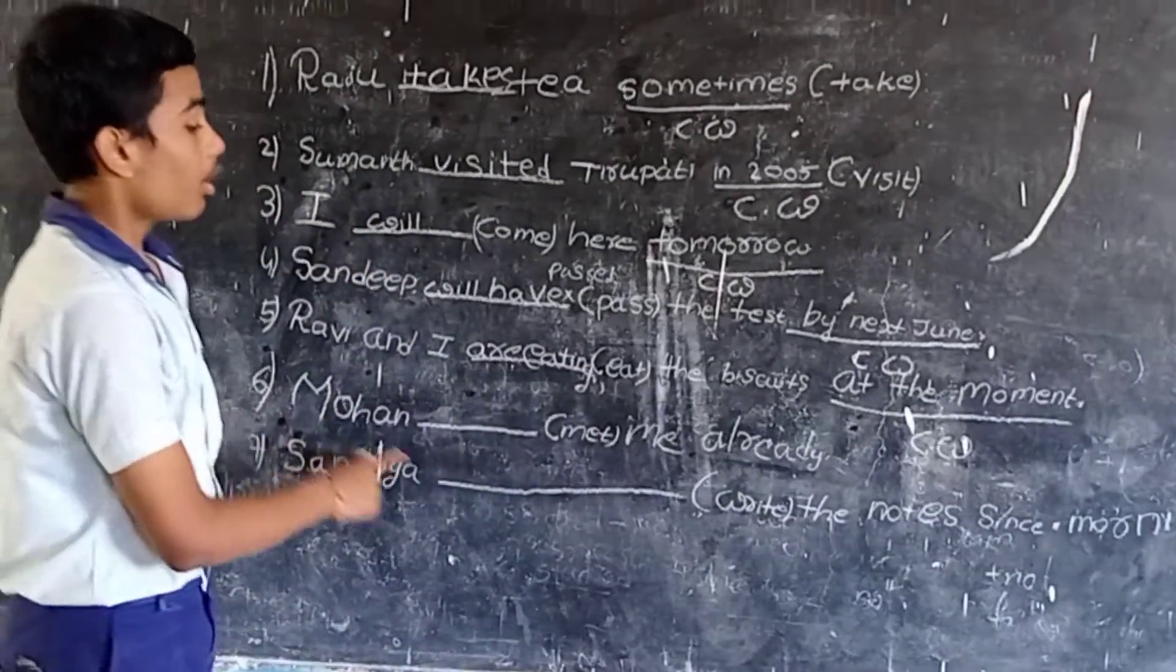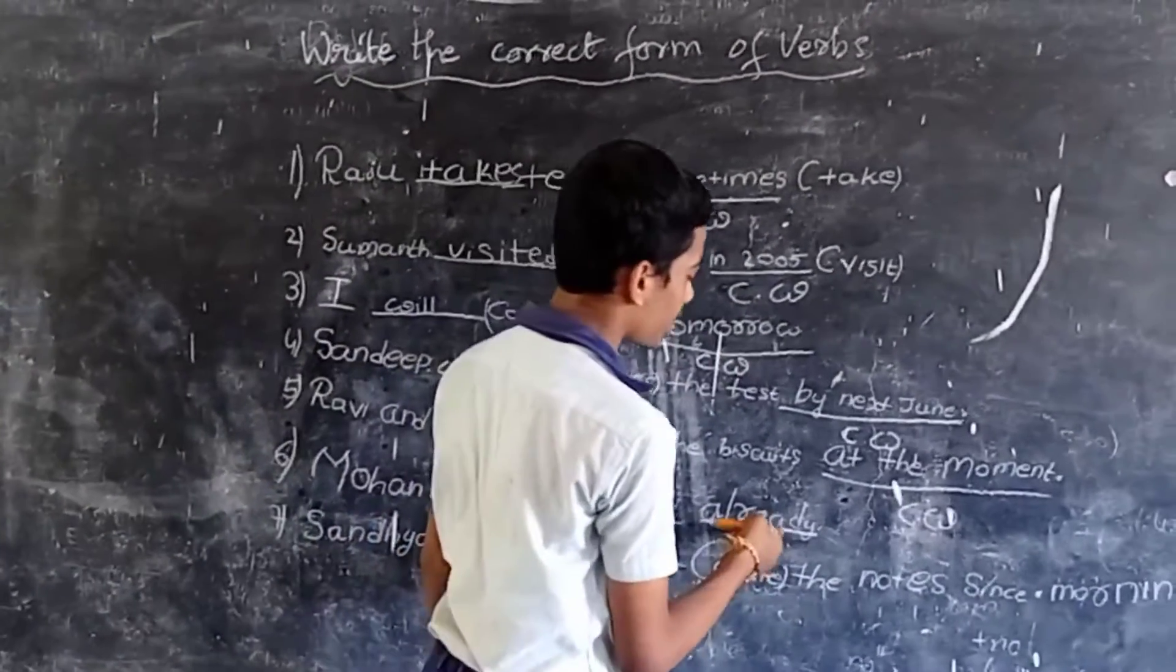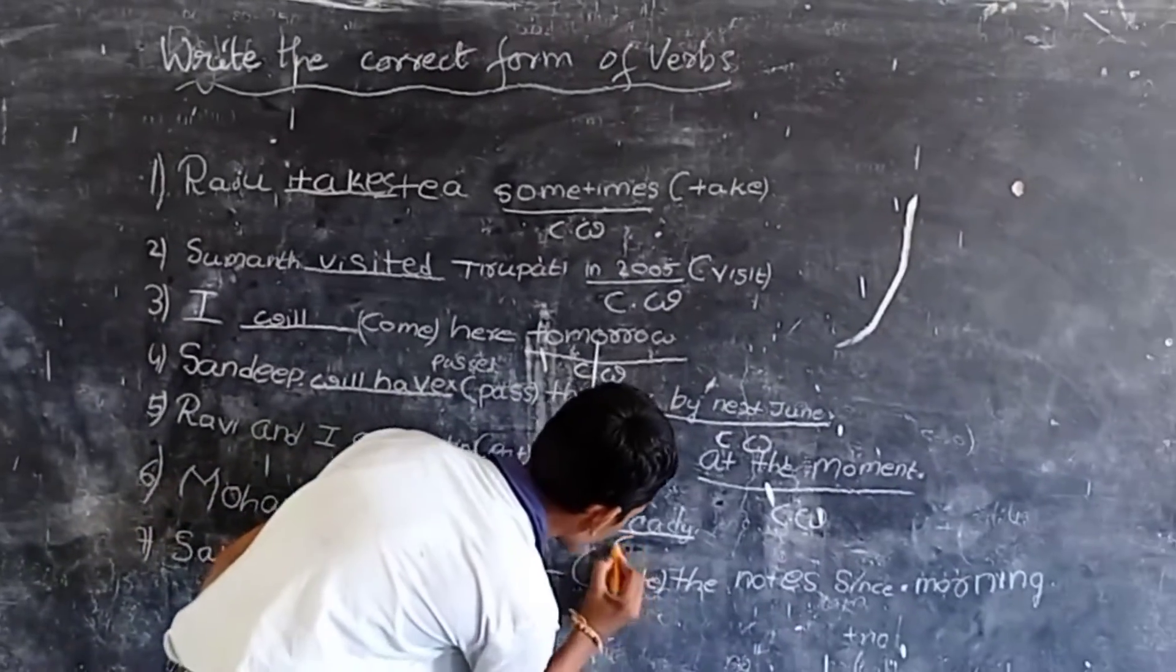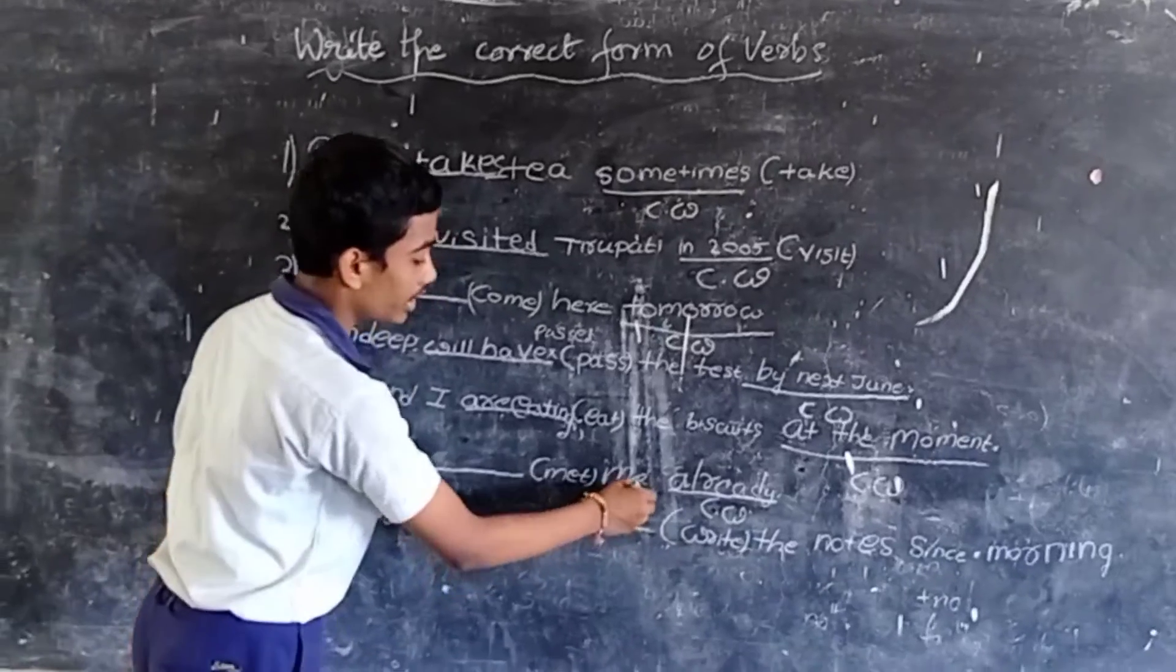Next example. Mohan met me already. Here, the clue word is already. It belongs to present perfect. Mohan has met me already.